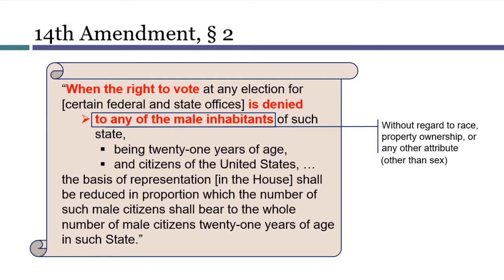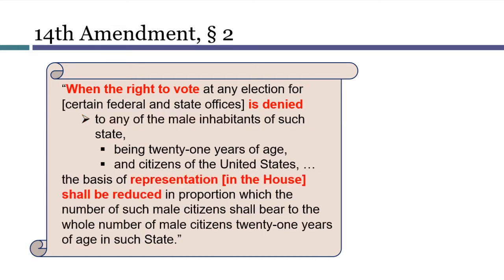States would face no adverse consequences under this section if they denied the vote to women, and in 1870, all of them did. Sadly, the 14th Amendment was the first time that any part of the Constitution expressly limited rights only to males. So what would happen if a state limited the right to vote only to its white men and denied the right to its black men? Under Section 2, states had the power to make that discriminatory choice, but they would risk losing seats in the House of Representatives if they did.